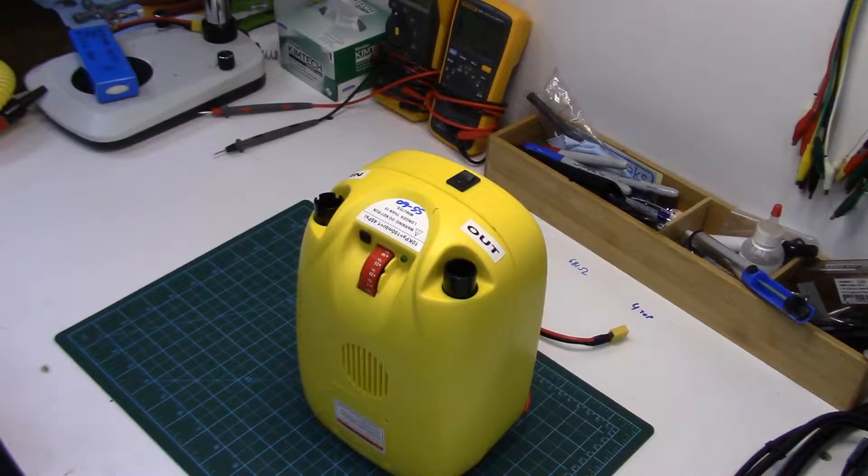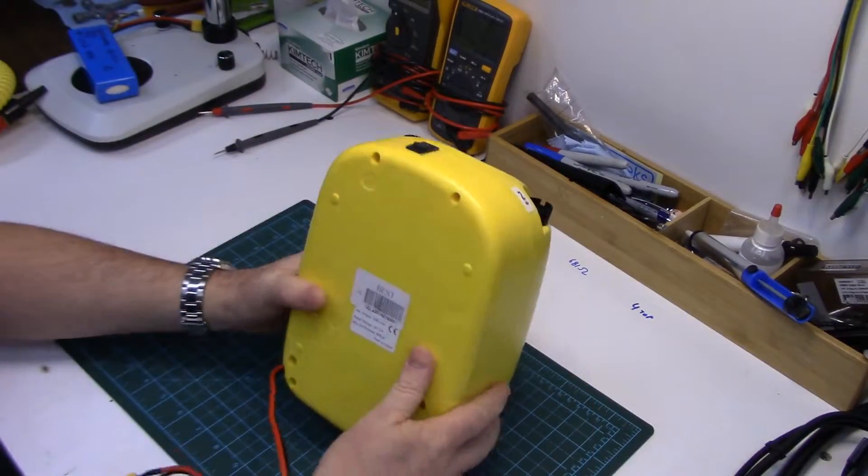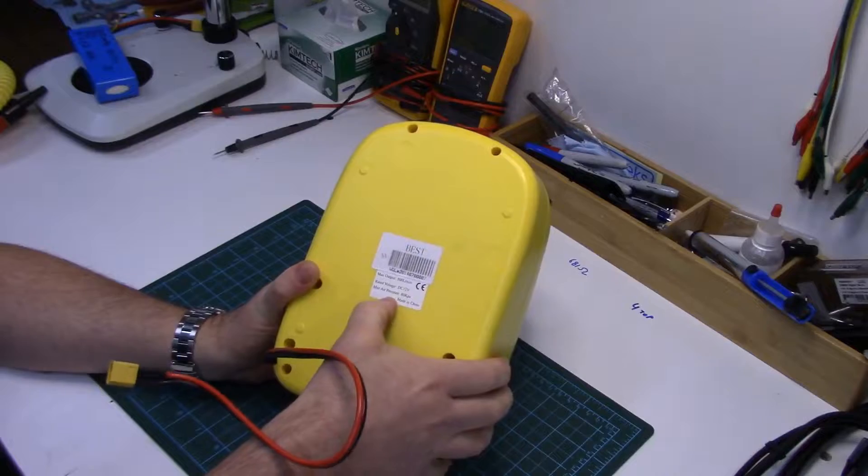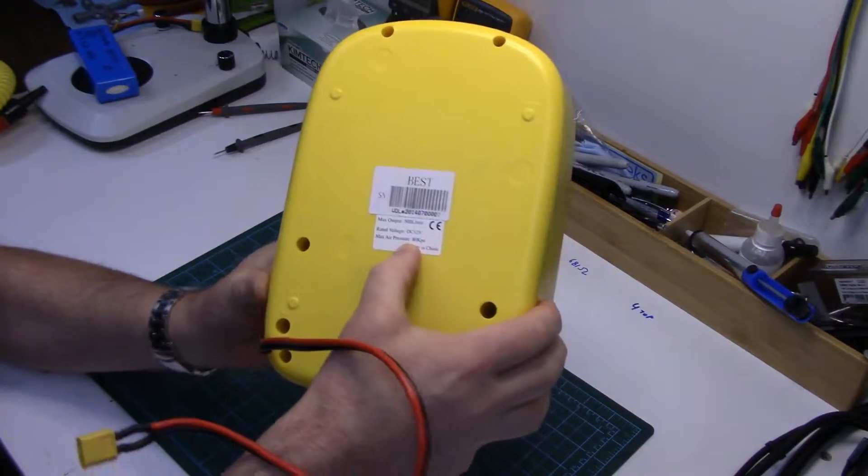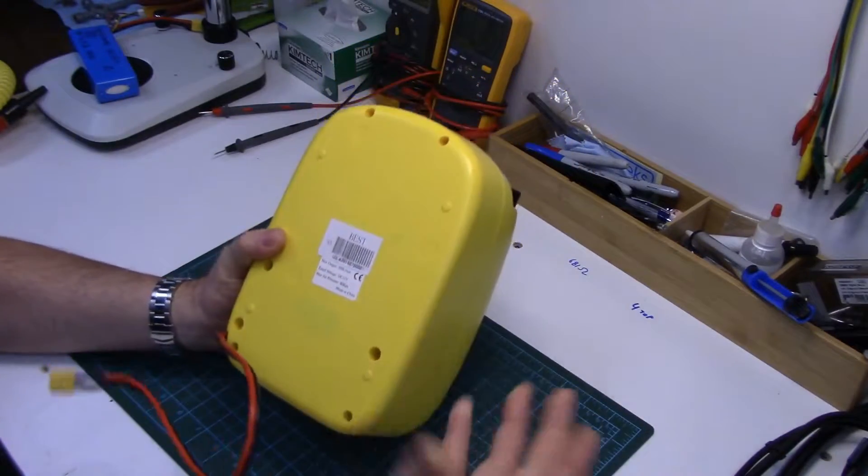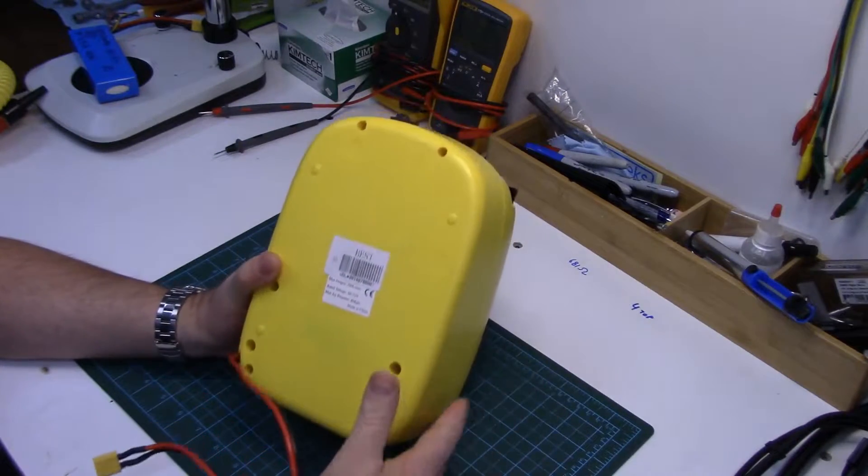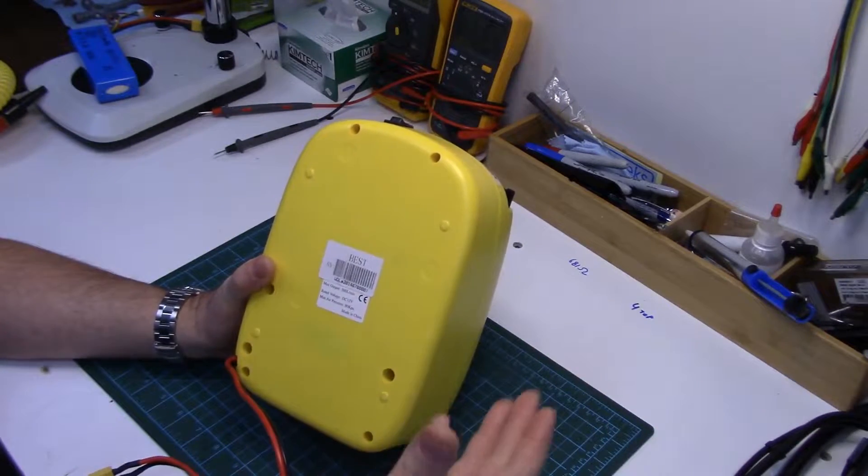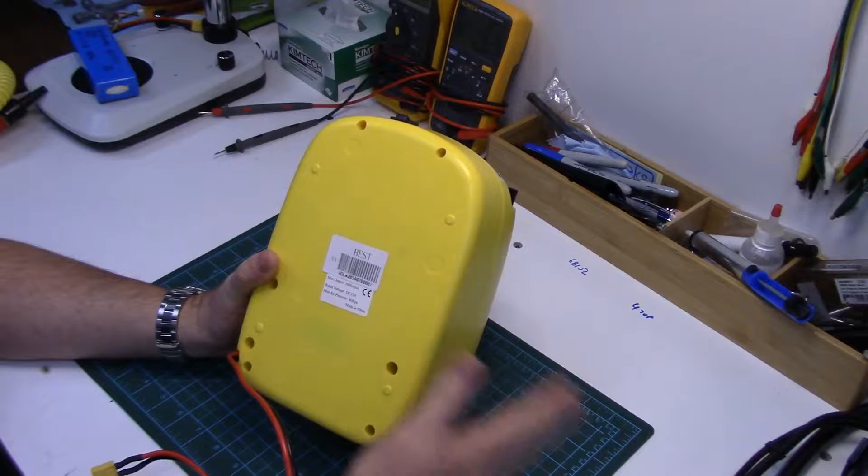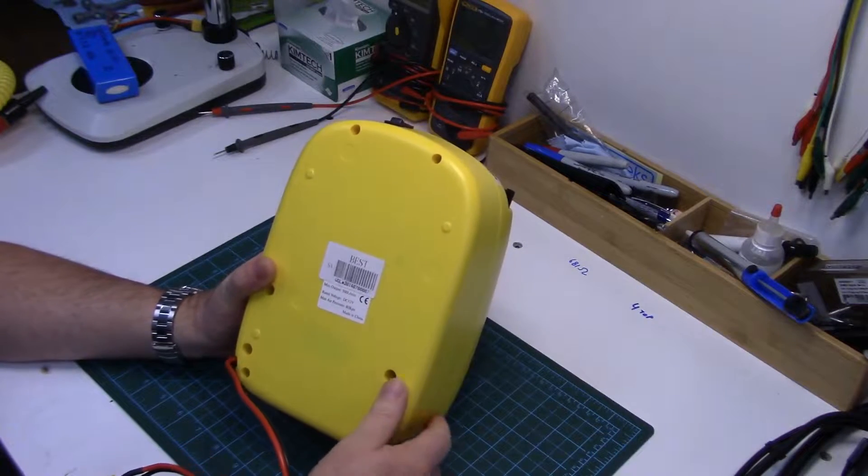And I thought we'd go over specifications as well. The maximum inflation pressure, it says, is 80 kilopascals, that's roughly 11.5 psi. So if you had an inflatable that needed more than about 10 psi, this is probably as much as this thing could put out.